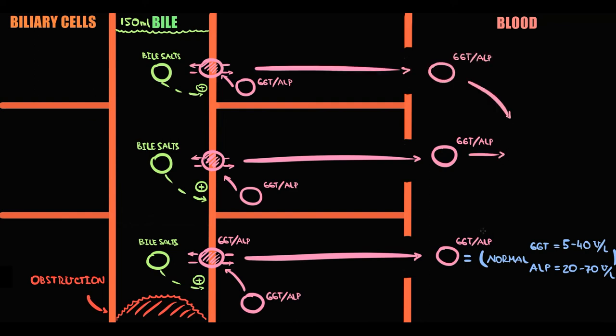So now the level of GGT and ALP will be three times higher than normal. For example, the level of GGT will be 100 and the level of ALP will be 200.